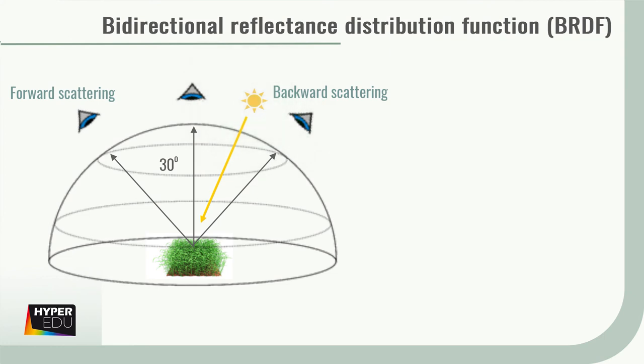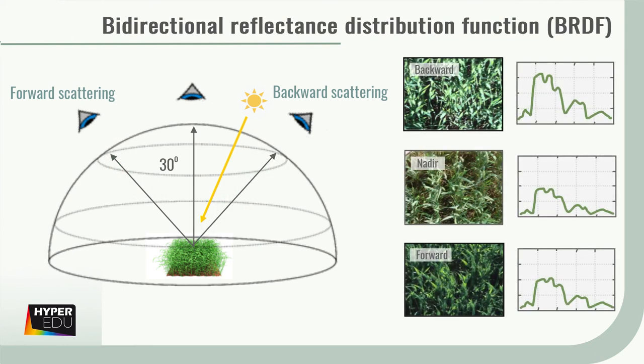The BRDF of a vegetation stand has a forward scattering area and a backward scattering area. Forward scattering is observed against the direction of illumination, and backward scattering with the direction of illumination. Therefore, the reflection in the backward scattering area is always stronger than in the forward scattering area.